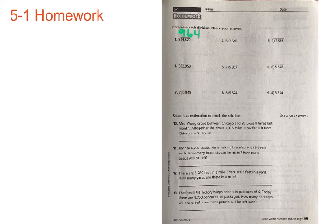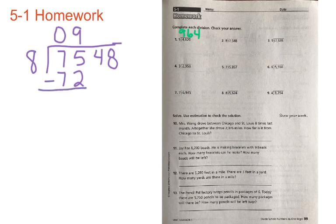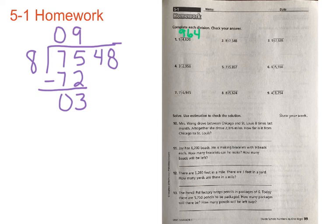Let's work on the next one together. We have a divisor of 8 going into the dividend 7,548. How many times can 8 go into 7? Zero — 8 is larger than 7. How many times can 8 go into 75? Nine times, because 8 times 9 is equal to 72. We line it up and subtract: 5 minus 2 is 3, and 7 minus 7 is 0. Check: our remainder of 3 is less than our divisor of 8 — we're good to go.